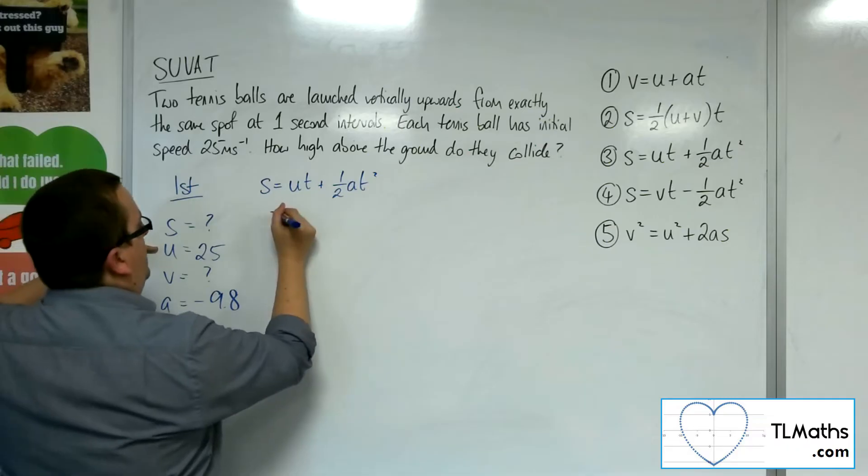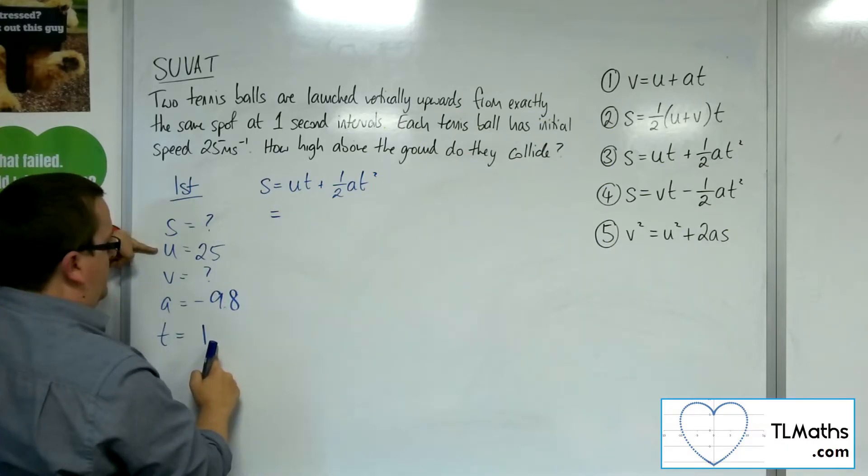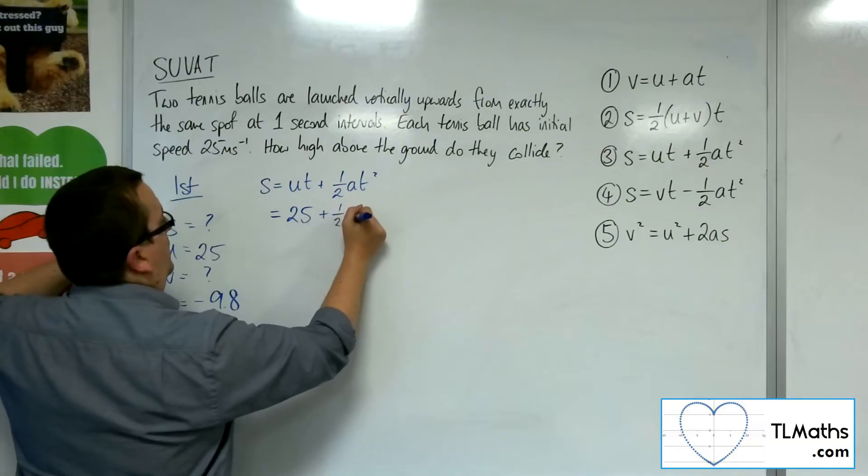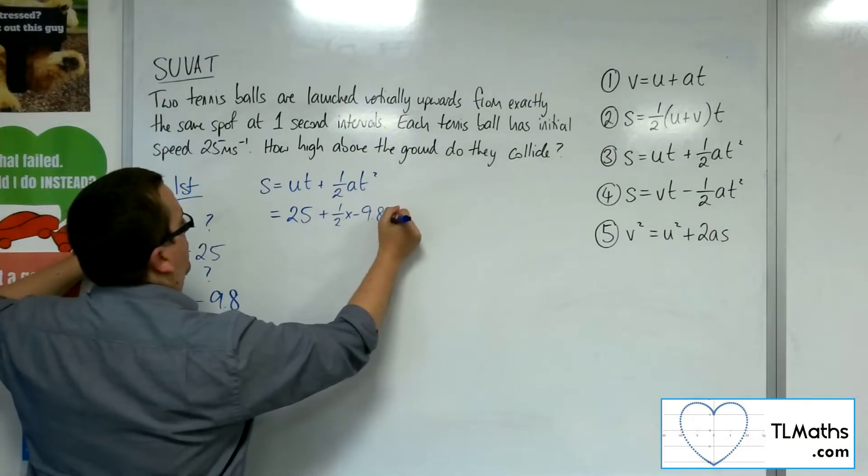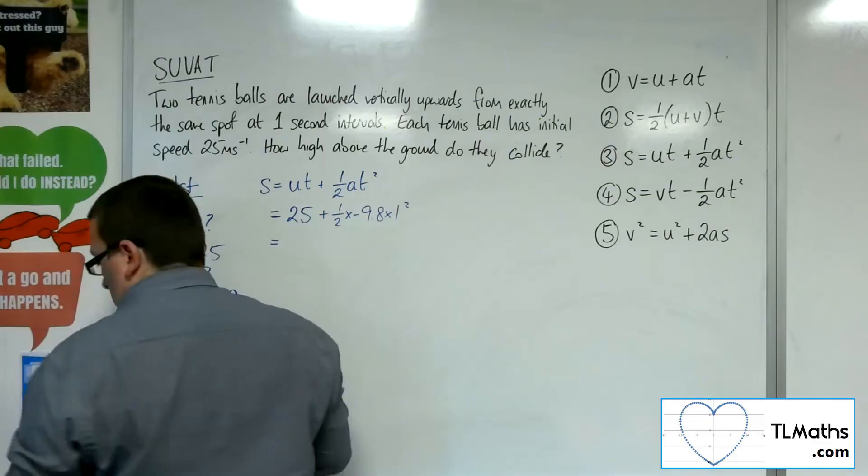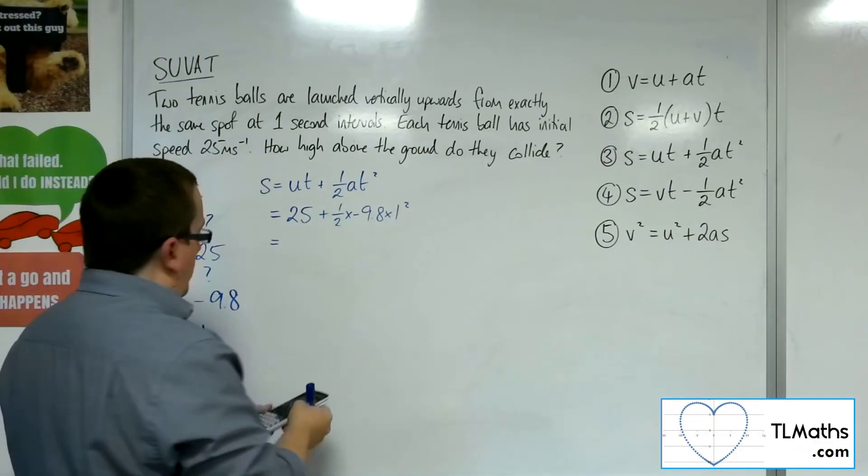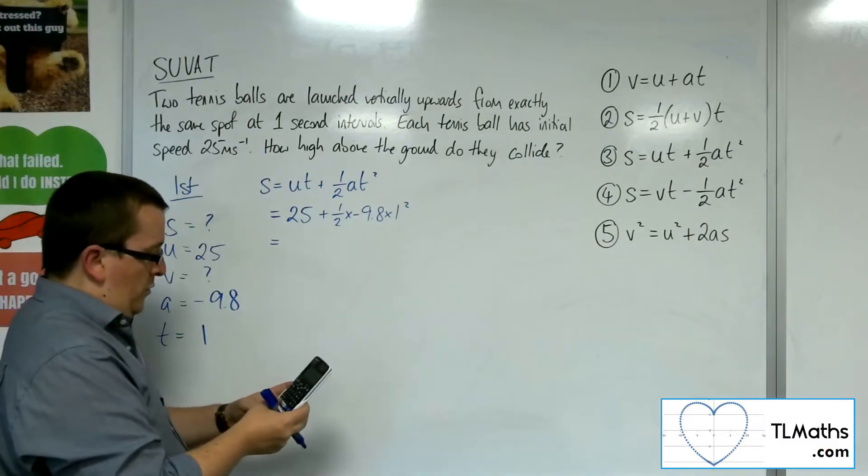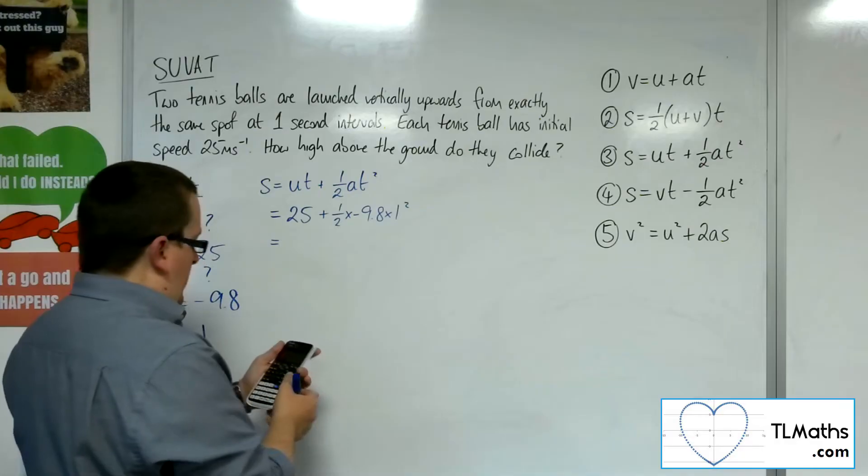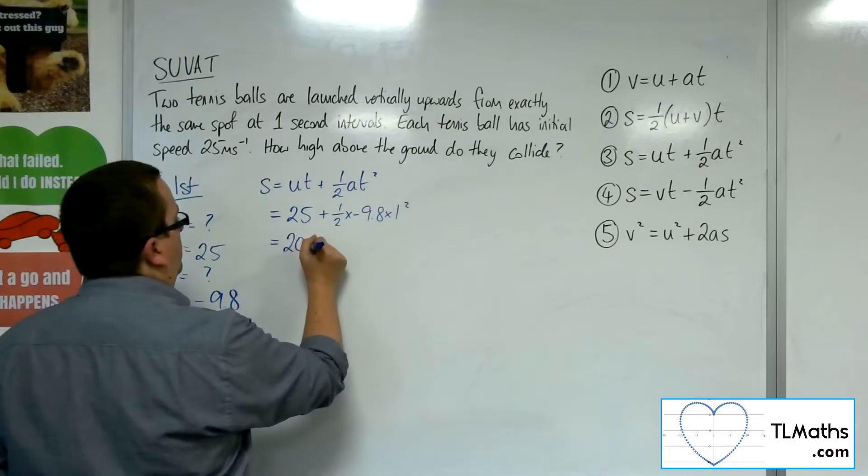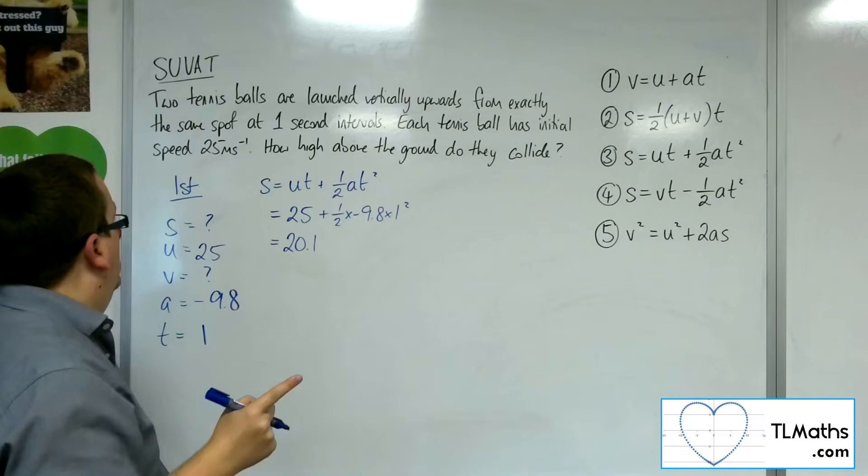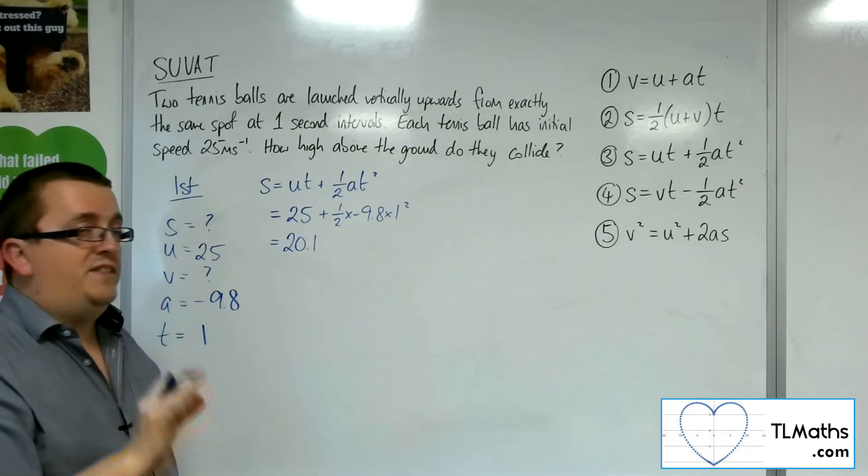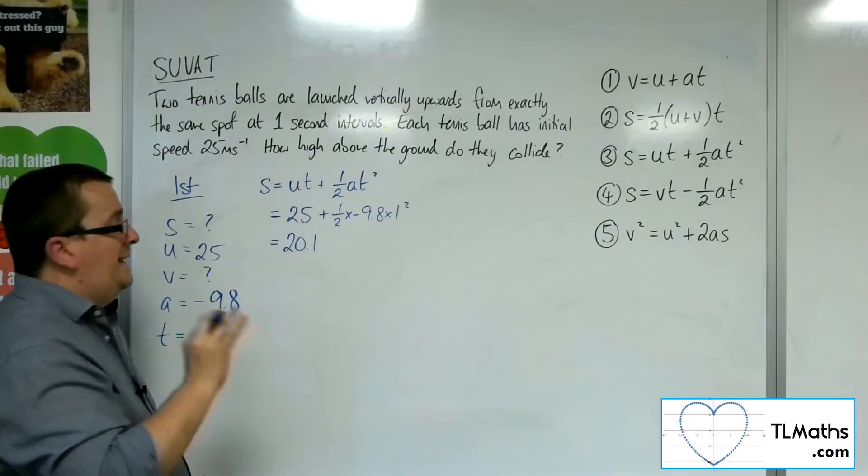So we've got 25 times t, so 25 times 1, plus half times minus 9.8 times 1 squared. So we've got 25 plus half of minus 9.8 times 1, which gets me 20.1. So after one second, the first ball has gone 20.1 metres into the air.